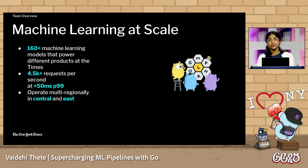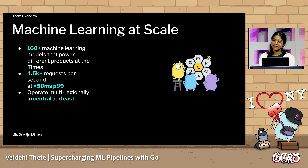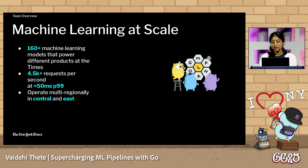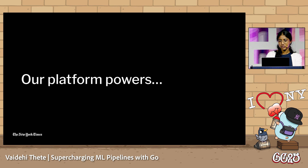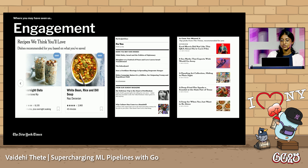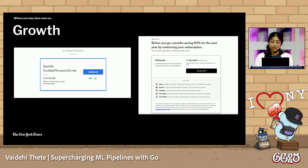I'd like to start by giving a brief background of what my team does. We productionize machine learning models built by different teams. We do so by hosting them on our platform, enabling them to deploy models to serve requests in a real-time, low-latency setting with high fault tolerance. Our platform is built using Go, and it powers cross-functional disciplines at the organizational level. For instance, we drive engagement by deploying models that recommend users what article to read next.